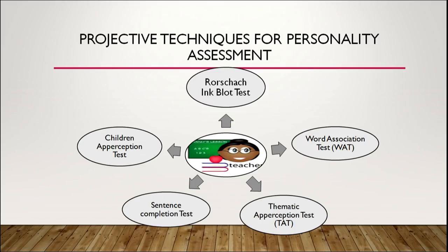The projective techniques for personality assessment we will focus on in this session are five: the Rorschach Inkblot Test, the Word Association Test (WAT), the Thematic Apperception Test (TAT), the Sentence Completion Test, and the Children's Apperception Test — which is a form of TAT but designed for children between the age group of 5 to 8 years.